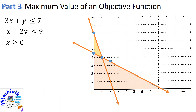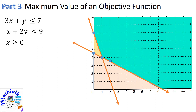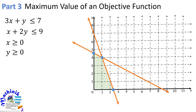Next, x is greater than or equal to 0 — these are the positive points from the y-axis going to the right. And y is greater than or equal to 0 — these are points from the x-axis going up. We have now graphed all the inequalities in our constraints. The solution to the system is the region which is the intersection of the solutions to all the linear inequalities, and this region contains the solution to our system of linear inequalities.